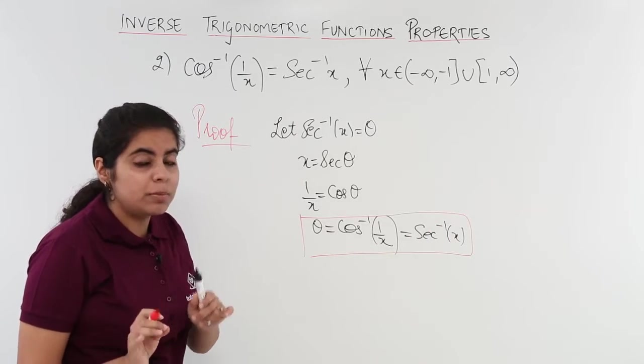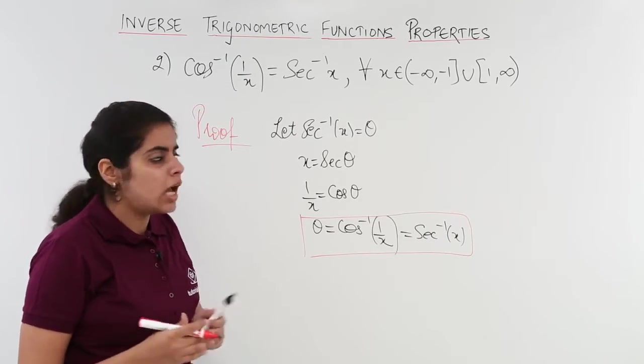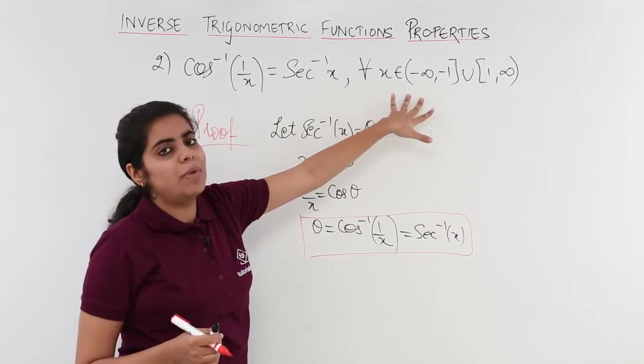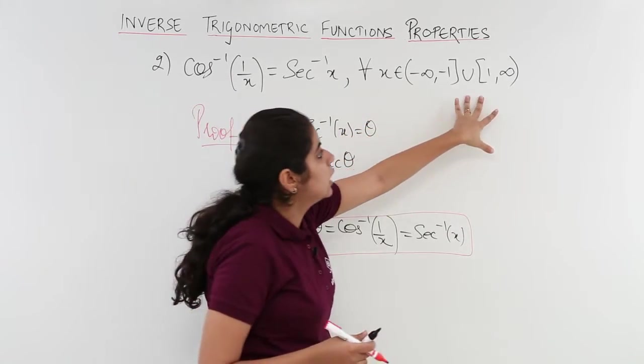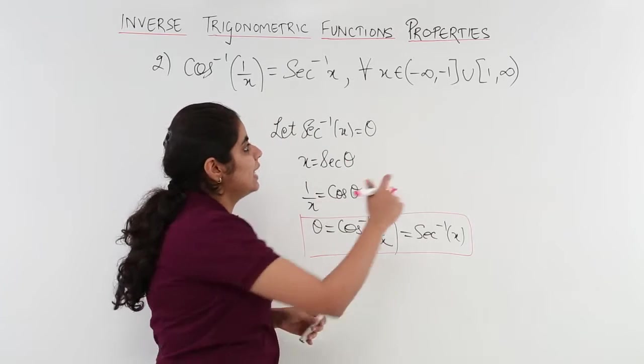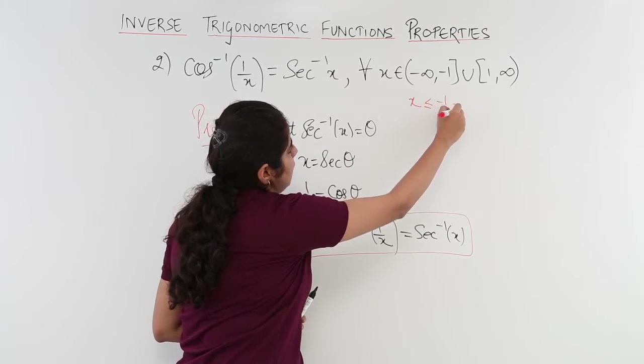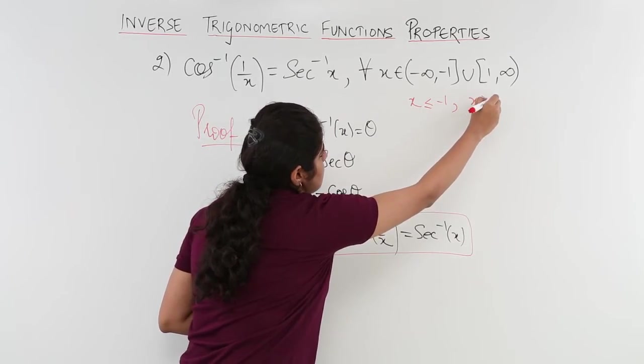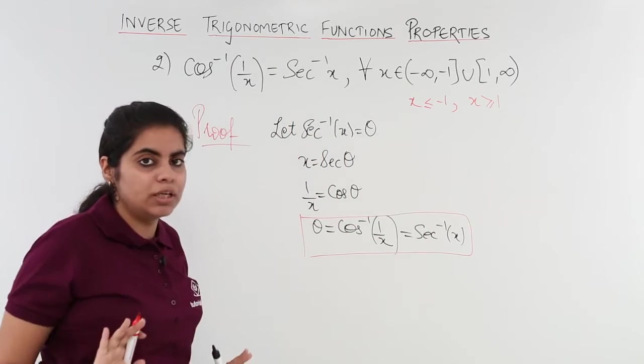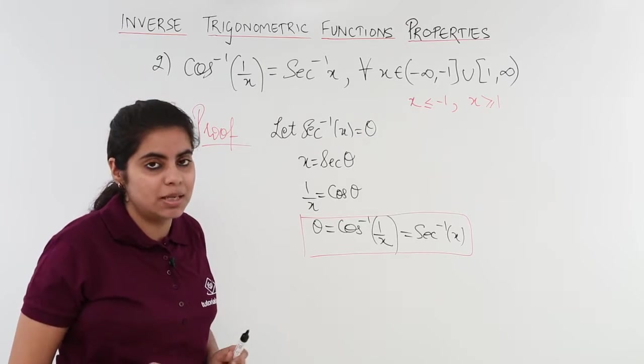Now talking about the range, domain, and everything, I have x minus infinity to minus 1 union 1 to infinity. That means x is less than equal to minus 1 and x is greater than equal to 1. That is the case that we already know for secant and cosecant, both things are same.